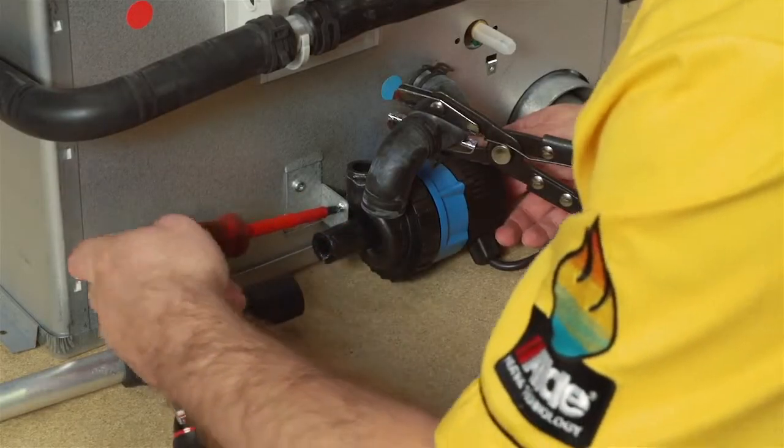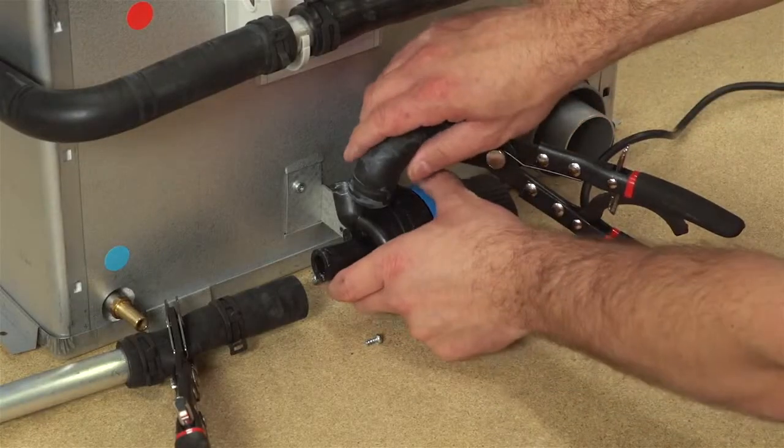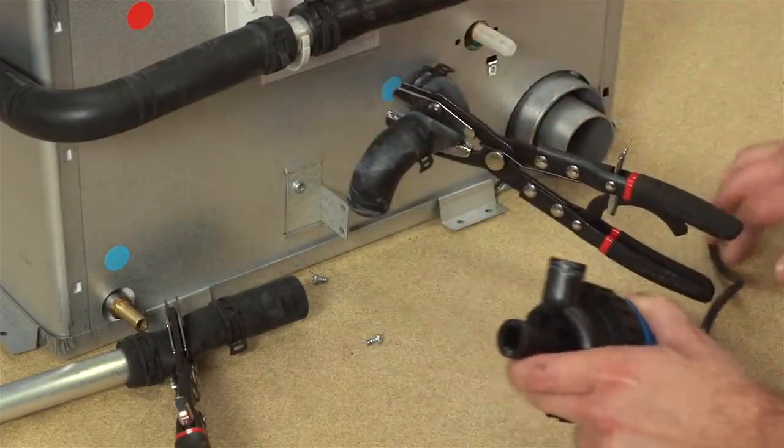Unscrew the two screws that connect the pump body to the pump bracket. Remove the pump, taking care to avoid any spillages in the vehicle.